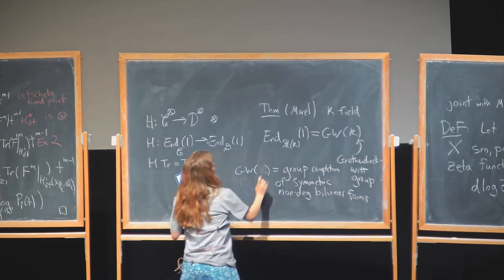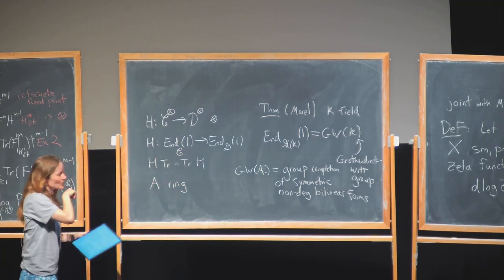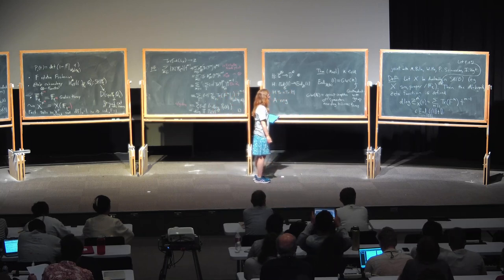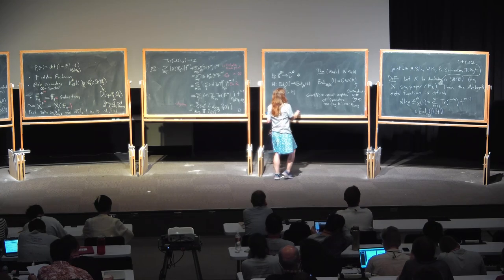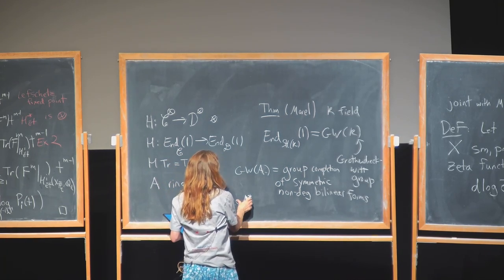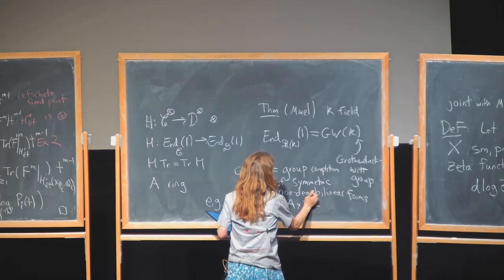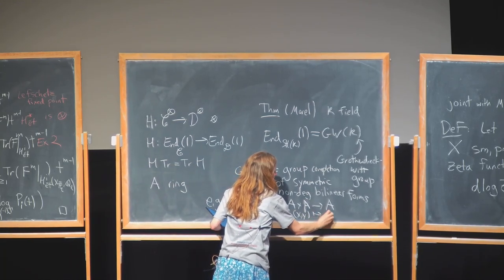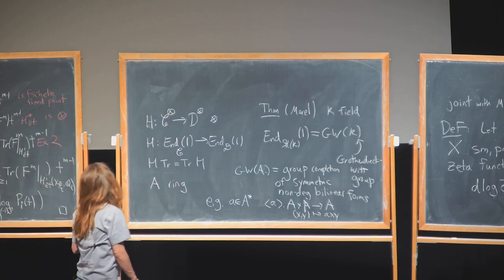GW(K) is the group completion — adding formal inverses — of isomorphism classes of symmetric, non-degenerate bilinear forms. We can sheafify and make an unramified sheaf, as in the work of Fabian. So we have the Grothendieck-Witt group completion of symmetric, non-degenerate bilinear forms. For notation: we have a symmetric non-degenerate bilinear form for a unit a in A. We can take A as a projective module over itself, and a bilinear form taking (x,y) to a·x·y.